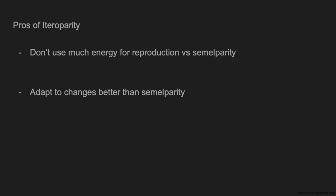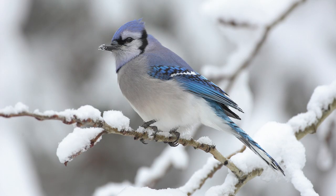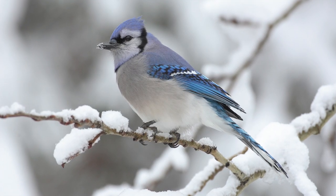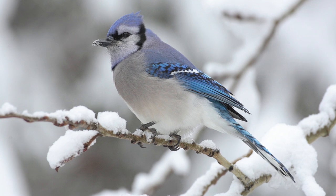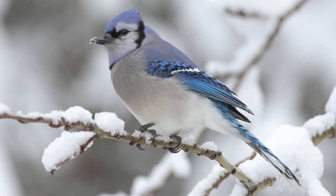Iteroparity is a reproductive strategy that involves multiple reproduction events in an organism's life. The main advantage of iteroparity is that organisms don't expend much energy into reproduction. They are also better tuned to changes in their environment, giving a fitness benefit for being iteroparous. This results in a lower fecundity of the organism. This is common and can be seen in birds, some reptiles, and mammals, due to the fact that birds and mammals care for their young.